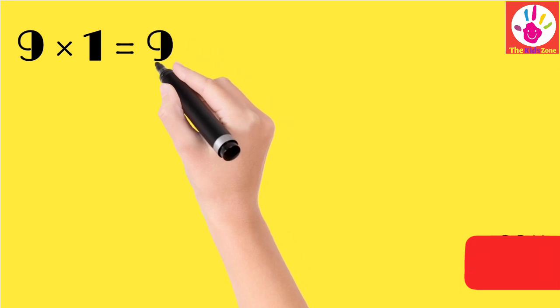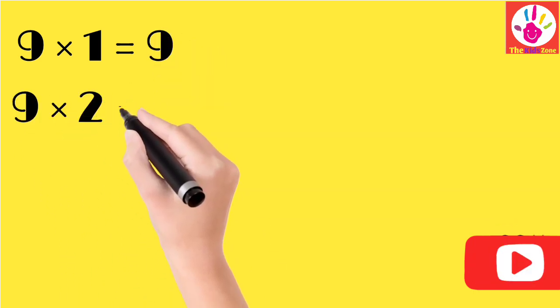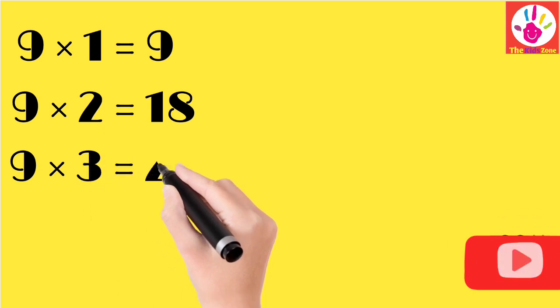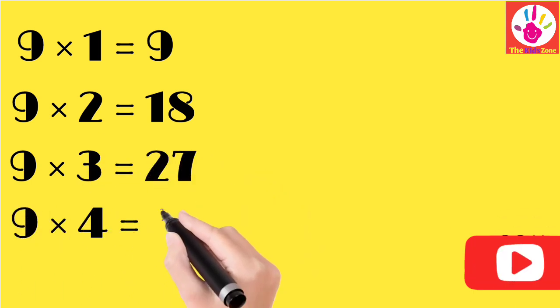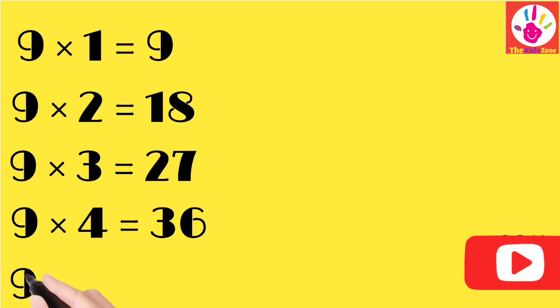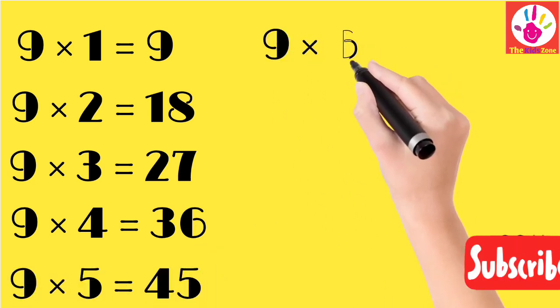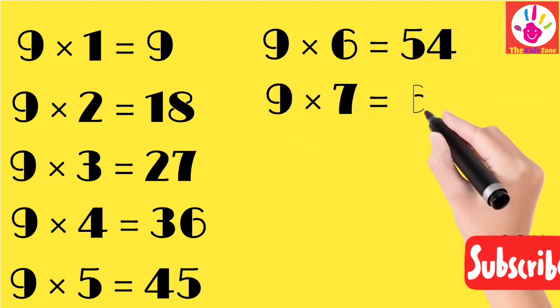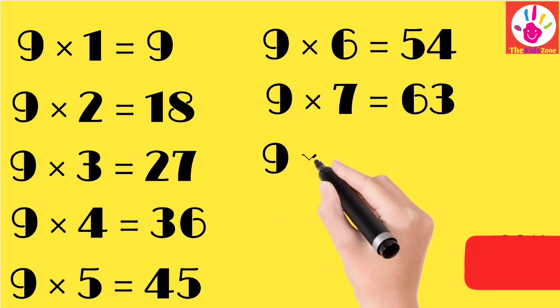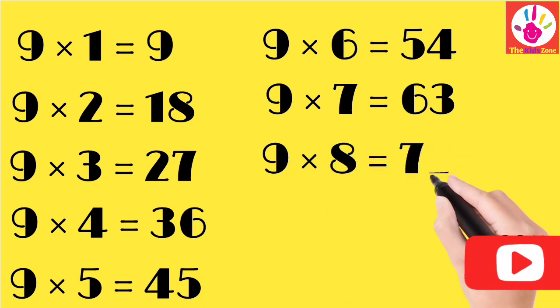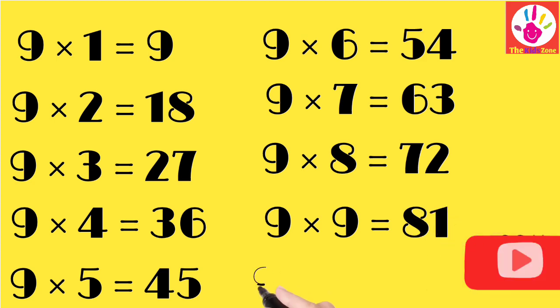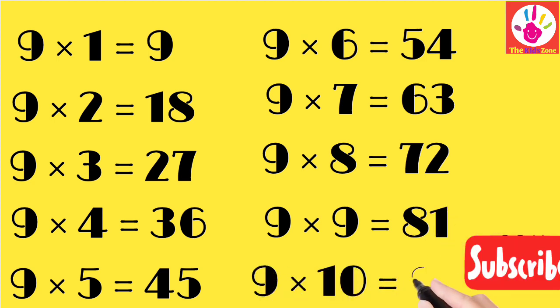Table 9: 9 ones are 9, 9 twos are 18, 9 threes are 27, 9 fours are 36, 9 fives are 45, 9 sixes are 54, 9 sevens are 63, 9 eights are 72, 9 nines are 81, 9 tens are 90.